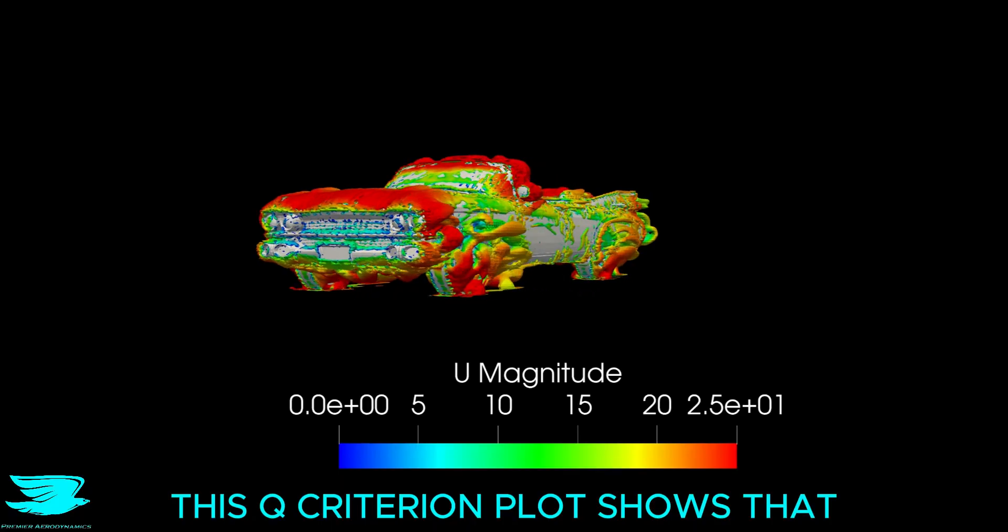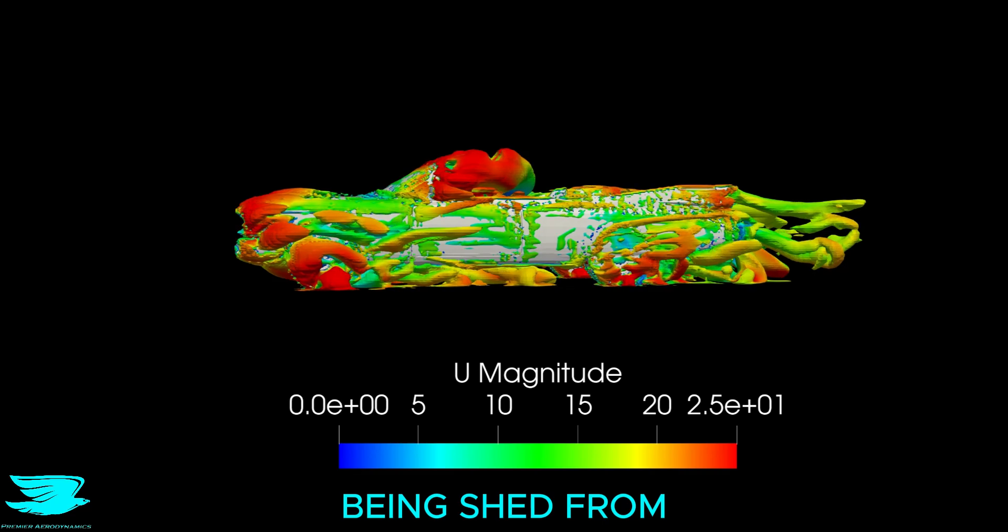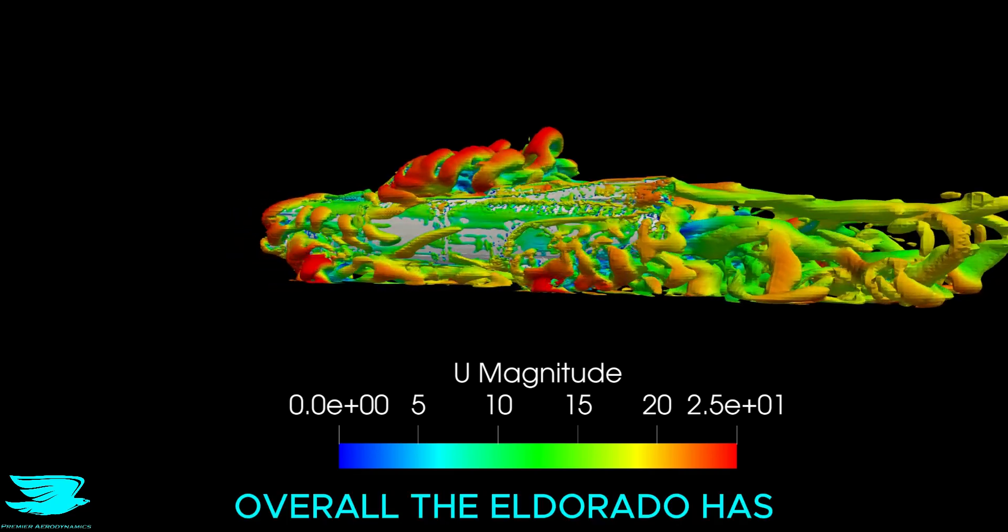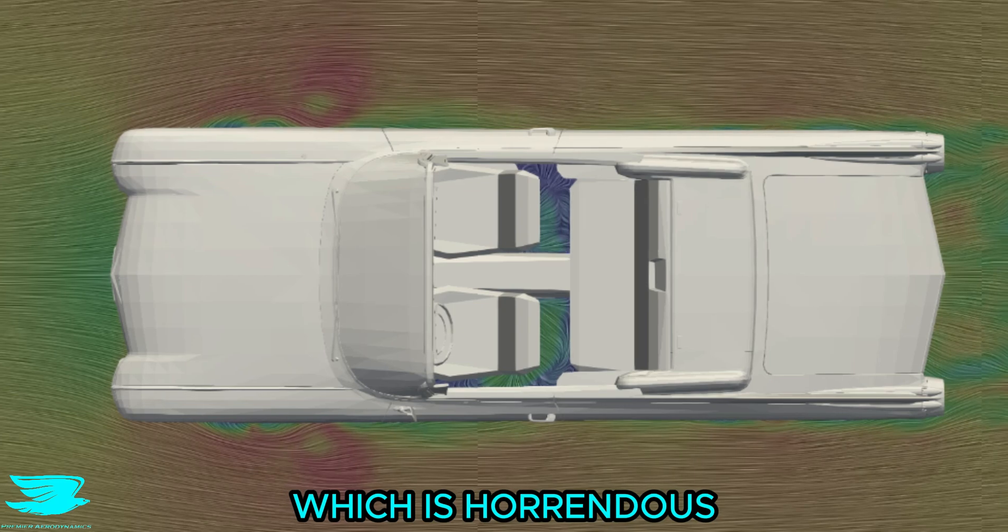This Q-criterion plot shows that there's this periodic vortex ring being shed from the front windshield. Overall, the El Dorado has a drag coefficient of 0.89, which is horrendous.